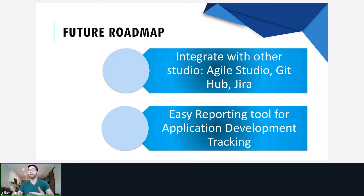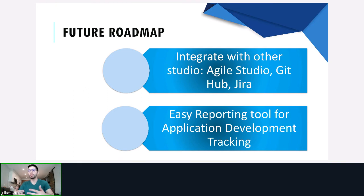Our future roadmap for the Rapid Release Dashboard is to continue integrating it with third-party apps like GitHub, Jira, and Azure DevOps — not because these third-party apps don't already offer dashboards, but so we can leverage Pega's out-of-box capabilities for tracking, as well as how it will play with the new deployment case type for your DevOps process. We also want to continue improving our reporting capabilities to make it easier for the user.